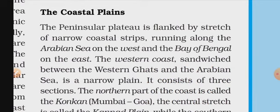This is our northern plains, which is called Sambal or Uttari. And this is the coastal plains, which is located where the landmass meets the sea. The peninsular plateau is flanked by a stretch of narrow coastal strips running along the Arabian Sea on the west and the Bay of Bengal on the east.